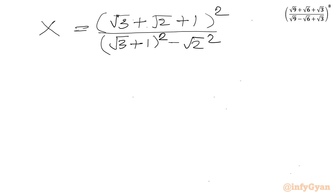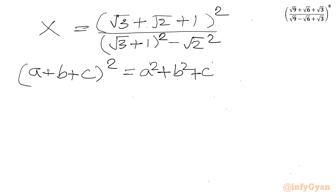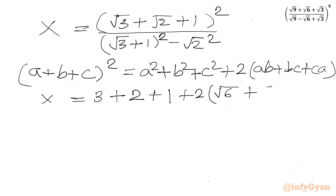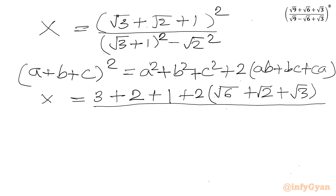This is x. Now we apply the (a + b + c)² formula in the numerator: a² + b² + c² + 2(ab + bc + ca). So x equals: numerator = (√3)² + (√2)² + 1² + 2(√3·√2 + √2·1 + 1·√3) = 3 + 2 + 1 + 2(√6 + √2 + √3). Denominator = (√3 + 1)² - 2 = 3 + 1 + 2√3 - 2.